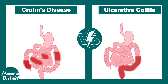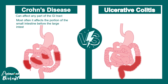When it comes to Crohn's disease and ulcerative colitis, there is a big difference at a macroscopic level. In Crohn's disease, any part of the GI tract could be affected, but most commonly some portions of the small intestine and some portions of the large intestine or colon are affected. In ulcerative colitis, the rectum and the sigmoid colon are mostly affected.